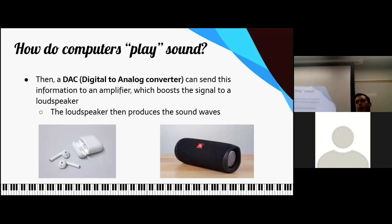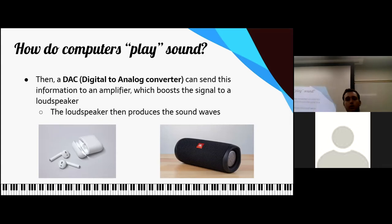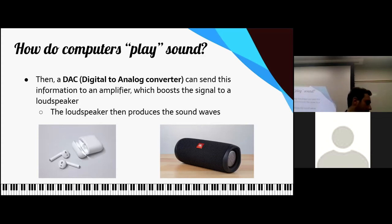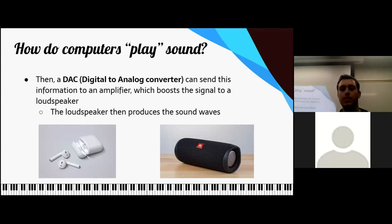So now we know how computers hear sound, but how do they play sound? There's a digital-to-analog converter — the opposite of the ADC. The sound stored inside the computer is digital, so we want to convert it to analog in order to hear it through a loudspeaker. We send the binary information to an amplifier — which can be a speaker or headphones. The loudspeaker produces the sound waves, and you're able to hear them based on all that information stored in the computer, sent through this digital-to-analog converter.